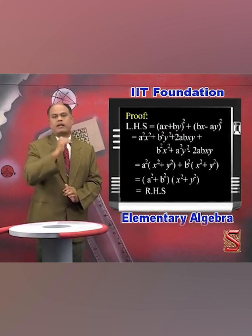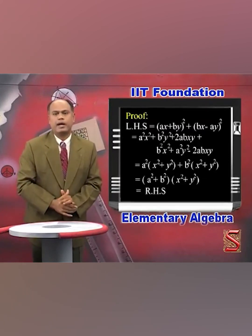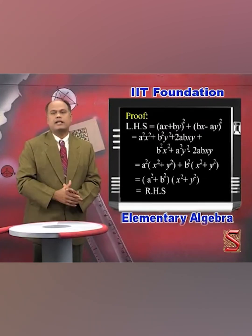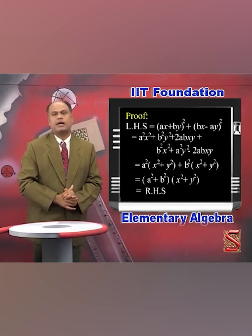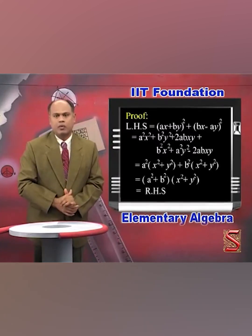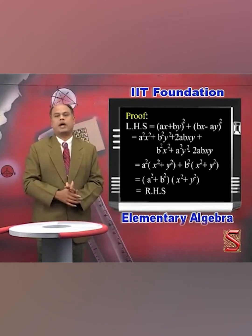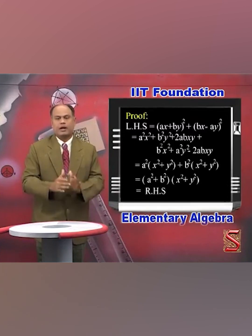Now we can cancel +2abxy and -2abxy. So the next step gives us A²(x² + y²) + B²(x² + y²).